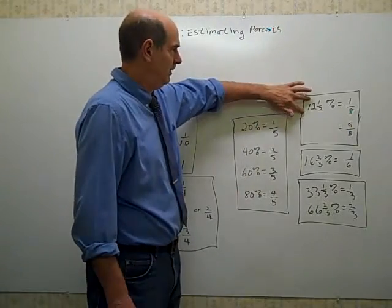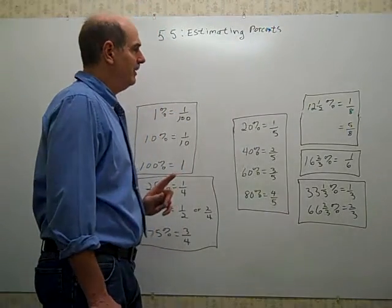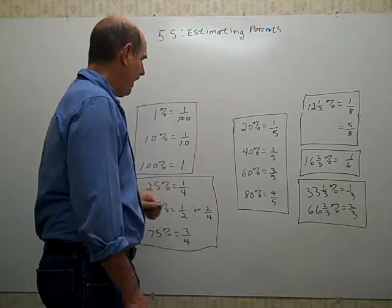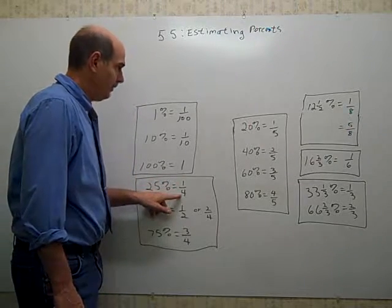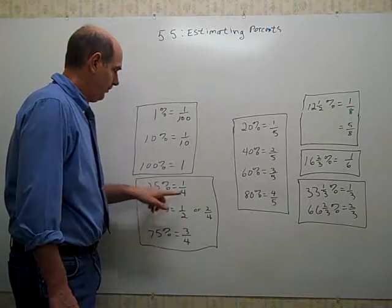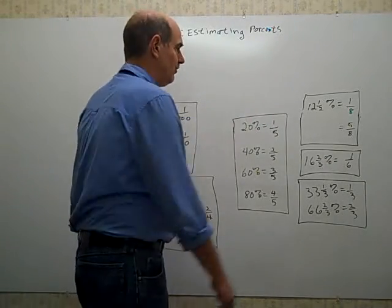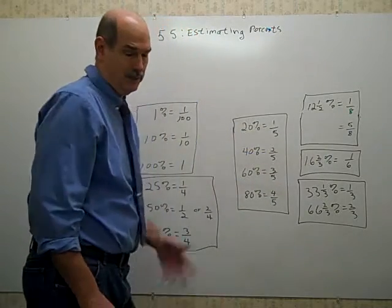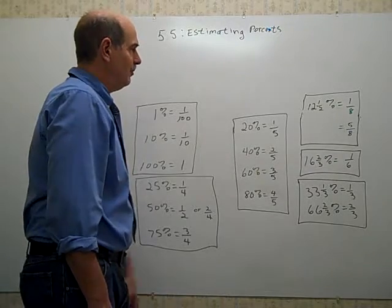You have to memorize this one. Twelve and a half percent is one-eighth. But you could also say, wait, twelve and a half is half of 25. And half of one-fourth is one-eighth. So you can use this fact to help you remember this one. This is not in the chart in your book, which by the way does appear in your book, this whole chart, so you can get it off of there.